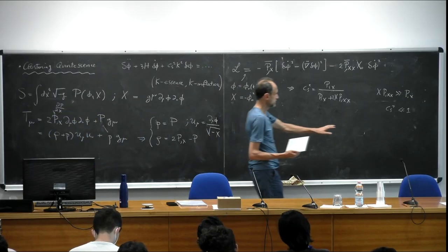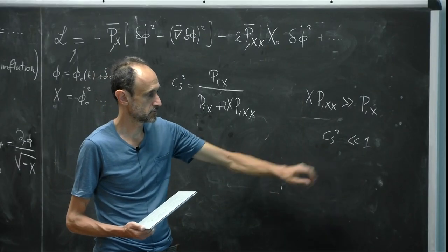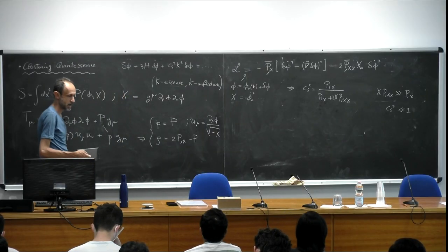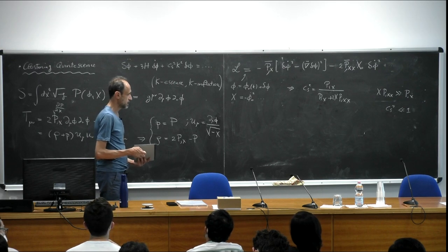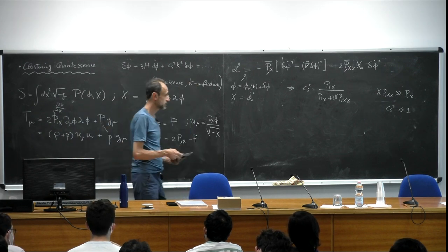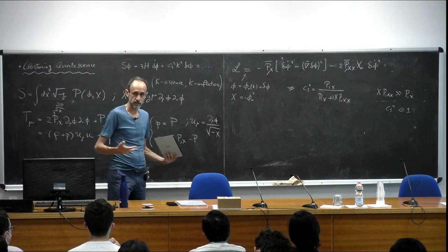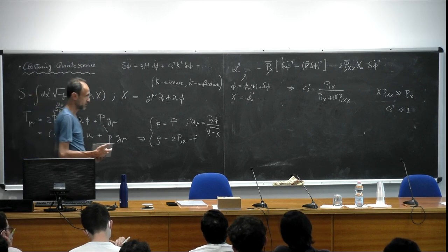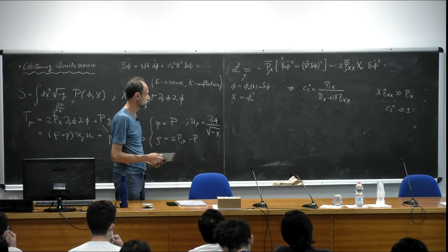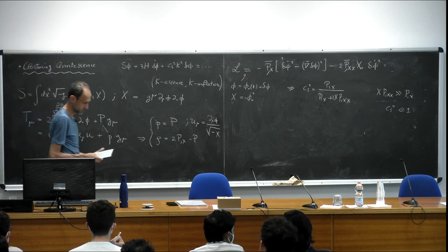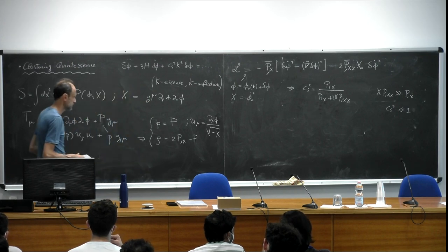When c_s is of order 10⁻⁶ to 10⁻⁷, the sound horizon of the fluctuations becomes smaller than a few megaparsecs, and you really see the dark energy field clustering along with dark matter, contributing to structure formation. People are building simulations to try to model this.